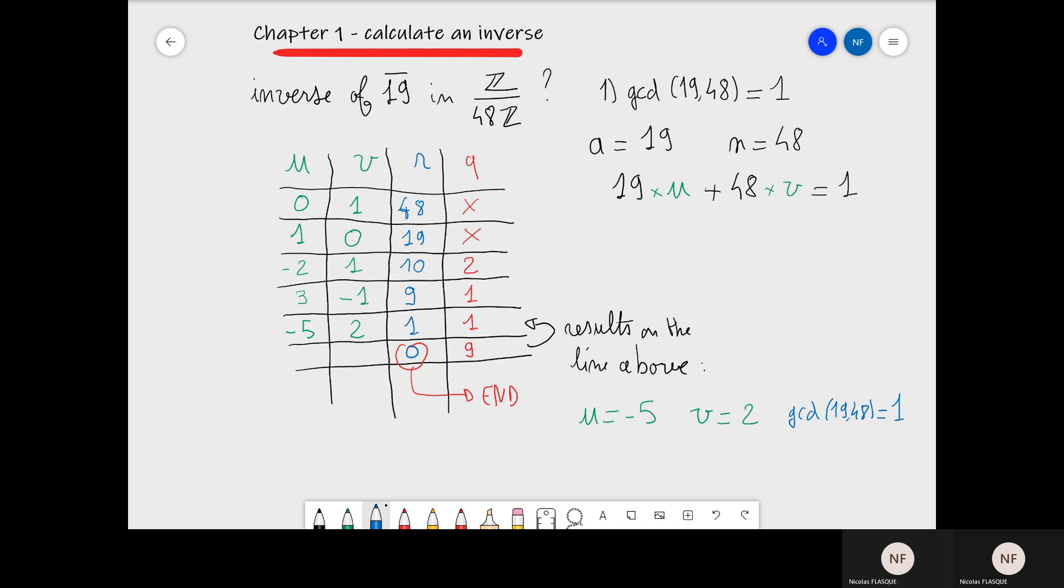What can we do from this result? The value we are looking for in this algorithm is only the value of U. So the inverse of 19 bar in Z over 48Z is minus 5 bar. As we are always looking for a final result where the number under the bar is between 0 and n minus 1, between 0 and 47, we use minus 5 modulo 48, which is 43 bar.